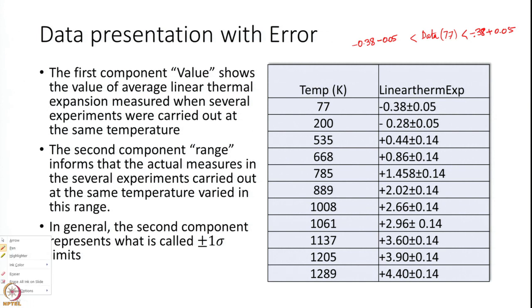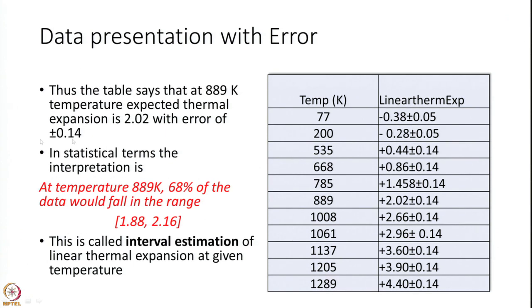At 889 Kelvin, the coefficient of thermal expansion is 2.02 plus or minus 0.14. In statistical terms, at 889 Kelvin, 68 percent of the data would fall in the range of 1.88 and 2.16. This is called an interval estimation of linear thermal expansion at 889 Kelvin. If you talk only about 2.02, it is a point estimator; when you add a range to it, it becomes an interval estimator.